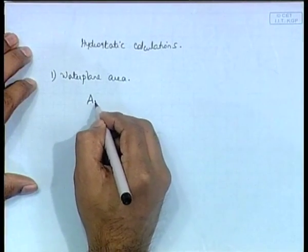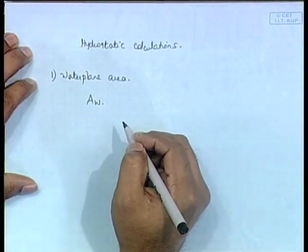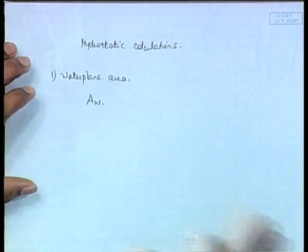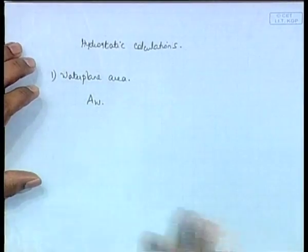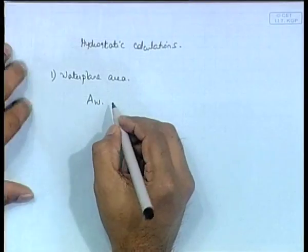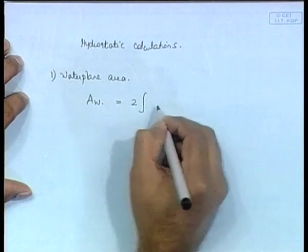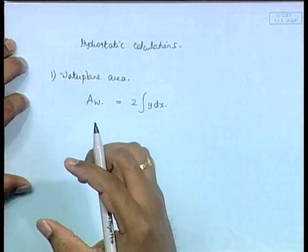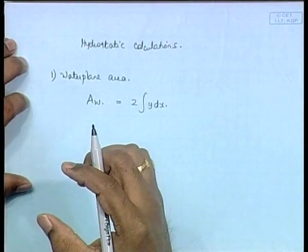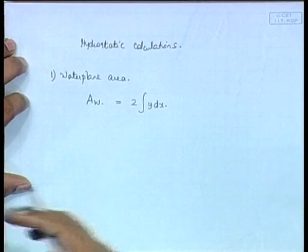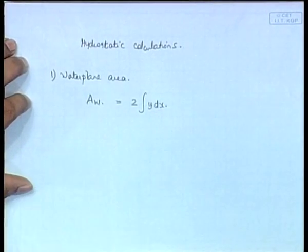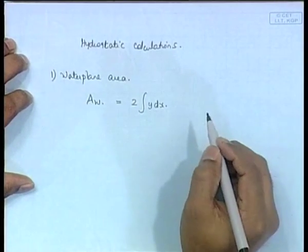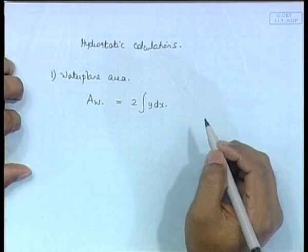Note that it is always written as AW — it is the water plane area, and as you know it is the area at the draft. Where the water line is cutting the ship, that area is known as the water plane area. It is twice the integral of y dx, where y is the half ordinate, and twice that will give you both sides of the ship — port and starboard. This is the integral equation for AW.